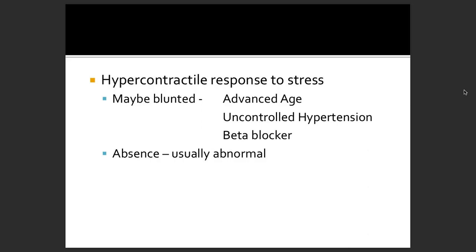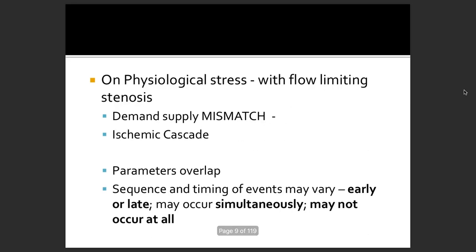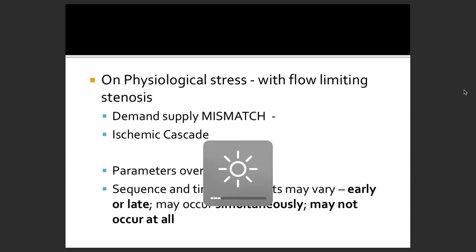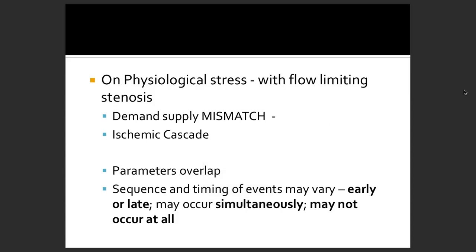The hypercontractile response may be blunted due to advanced age — for example, if someone is in their 80s or 90s — or if someone has taken a beta blocker, or even if there is uncontrolled hypertension. On the basis of physiological stress with flow-limiting stenosis, there will be a demand-supply mismatch leading to the ischemic cascade.